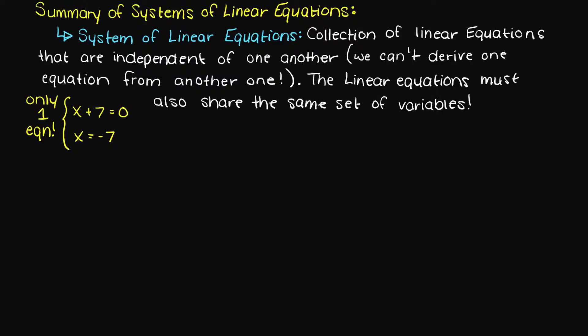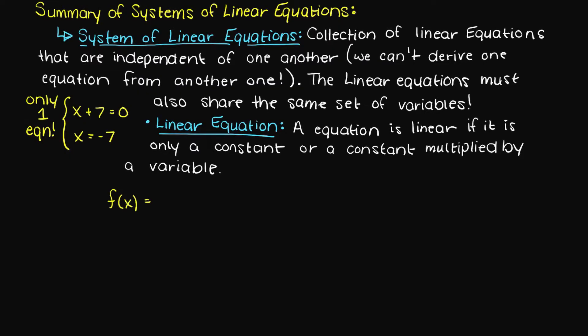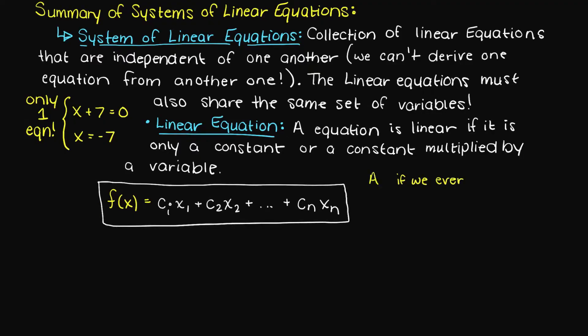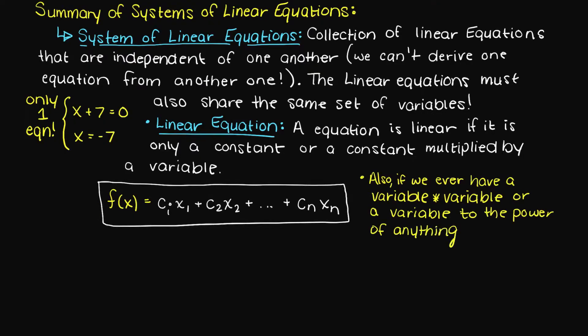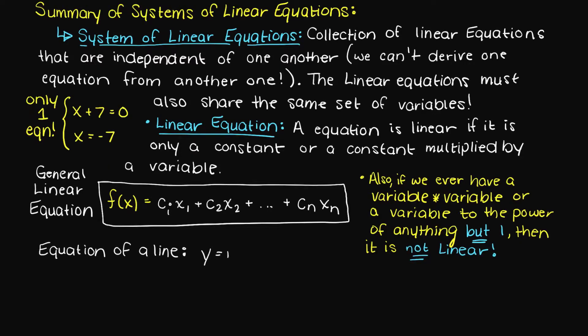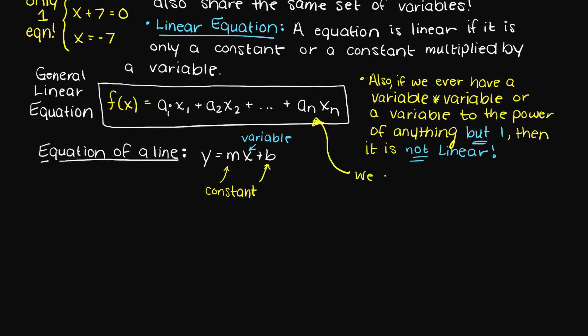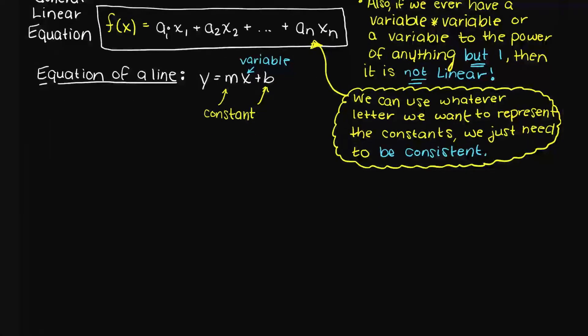Now that we have a rough idea of what a system of linear equations is, we should review what a linear equation is just to be thorough. An equation is linear if each term is simply a constant or a constant multiplied by a variable. Think of this like the equation of a line: y equals m times x, which is a constant times a variable, plus b, which is simply a constant. You could also have something like a1 times x1 plus a2 times x2 plus b equals zero, and since all of these are a constant times a variable, we know that our equation is linear.